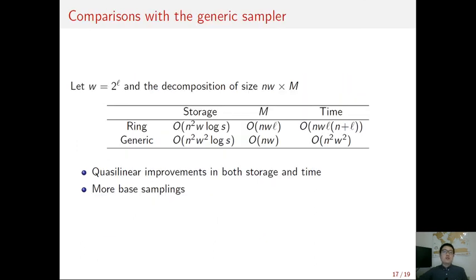With an integral gram root over rings, we can adapt the previous algorithm as a ring-based Gaussian sampler. Compared with the previous generic solution, the ring-based sampler achieves a quasi-linear improvement in both storage and running time. But the cost is that it requires more base samplings because the resulting gram root in the ring setting has an even larger column number than the generic solution.